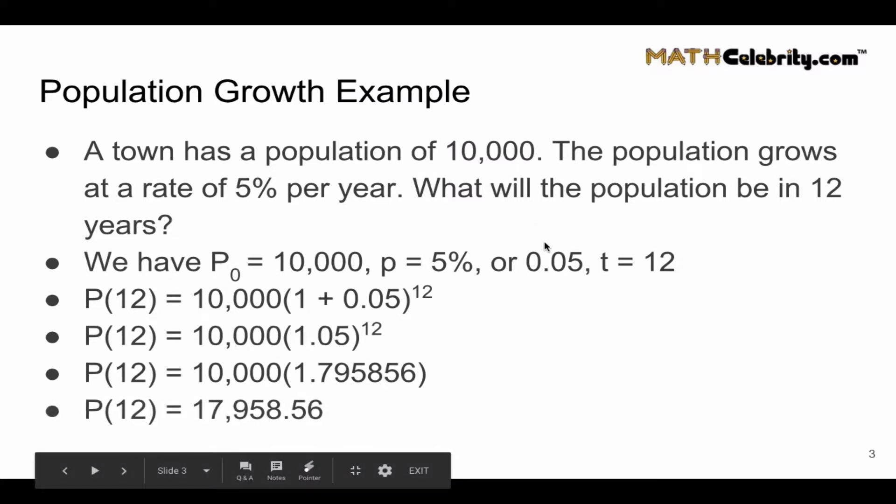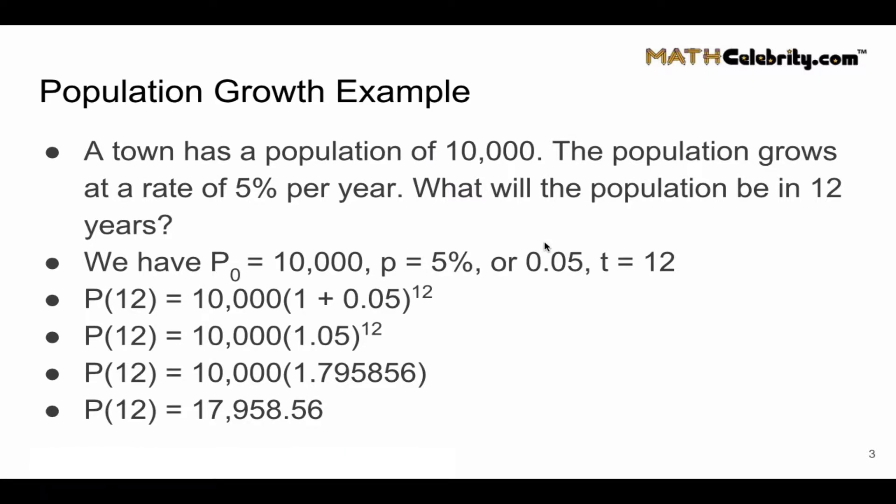So our population at time 12 is 17,958.56, and these problems generally want you to round. In this case, because it's more than half a person, you can round up. If there's multiple choice, I usually look for the closest answer, either 17,958 or 17,959.